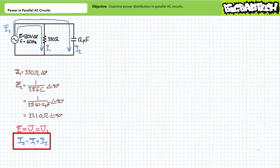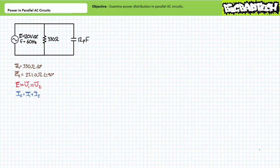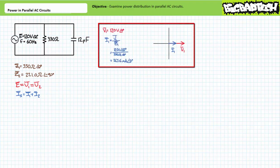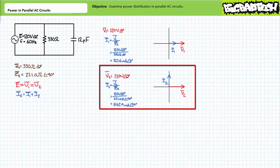A Kirchhoff's current law analysis of this parallel circuit suggests that source current equals I1 plus I2. Now that we've established a basic framework, we can move on to solve for individual desired properties. Perhaps the easiest and most direct means is through Ohm's law, followed by a subsequent Kirchhoff's current law analysis. Ohm's law suggests the current through impedance Z1 equals 363.6 milliamperes at an angle of zero degrees. A second iteration of Ohm's law suggests the current through impedance Z2 equals 542.9 milliamperes at an angle of positive 90 degrees.